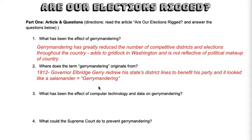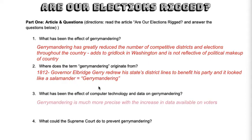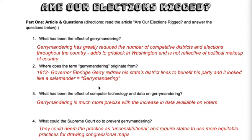Number three: what has been the effect of computer technology and data on gerrymandering? It means that it's gotten much more precise — make sure you have that word in your answer. Because we know so much about people now with technology and data, gerrymandering can be hammered down to even the exact street and address. Number four: what could the Supreme Court do to prevent gerrymandering? They could use judicial review and determine that the practice is unconstitutional. In turn, they could require that states use the same system — no state can do their own thing, every state has to use the same system to make it more equitable. That is what they could do; they have not done it yet and have left it up to the states.